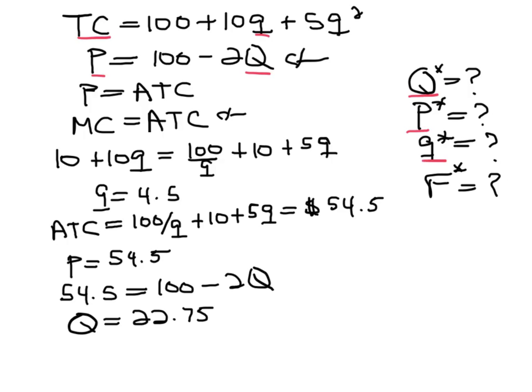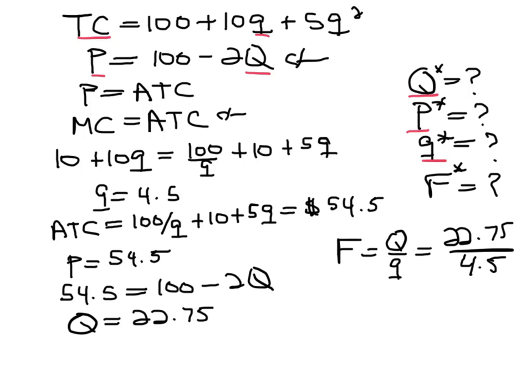The only thing we have left is to find the number of firms, which we hope is going to be a lot less than 50. The number of firms is going to be equal to the market quantity divided by the firm quantity — that's 22.75 divided by 4.5 — so the number of firms is going to be equal to around 5.